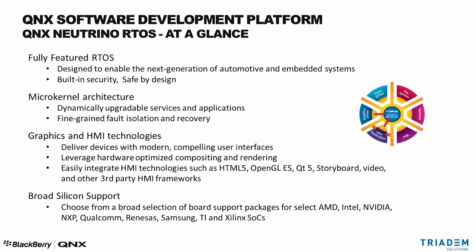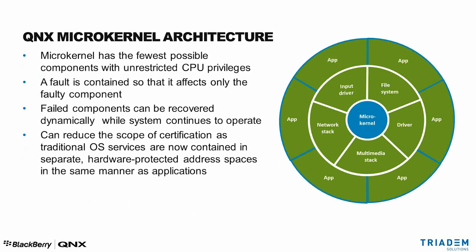Evaluating an embedded OS is a complex and difficult task — you want to make sure the choice you make will last for several years, as porting code from one OS to another can be very expensive. QNX is a full-featured OS with built-in security and safety by design. The microkernel architecture is central to this, along with very good support for graphics and HMI solutions like OpenCL ES, HMI frameworks, Crank Storyboard, and Qt. You also need good hardware support and the possibility to change silicon vendors with very little porting effort.